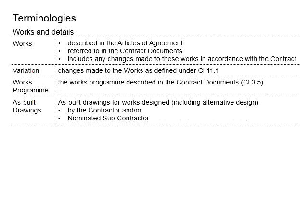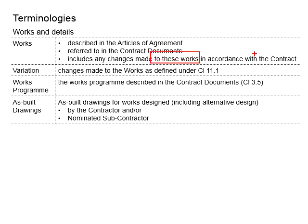Next we look at the terminologies related to the works and details. In the contract document, whenever the term 'works' appears, it is referring to the work as described in the articles of agreement in accordance with the project. The works can be referred from the contract document and also include any changes made to the works in accordance with the contract. Normally these works refer to the works to be done by the contractor to finally deliver the project back to the employer.